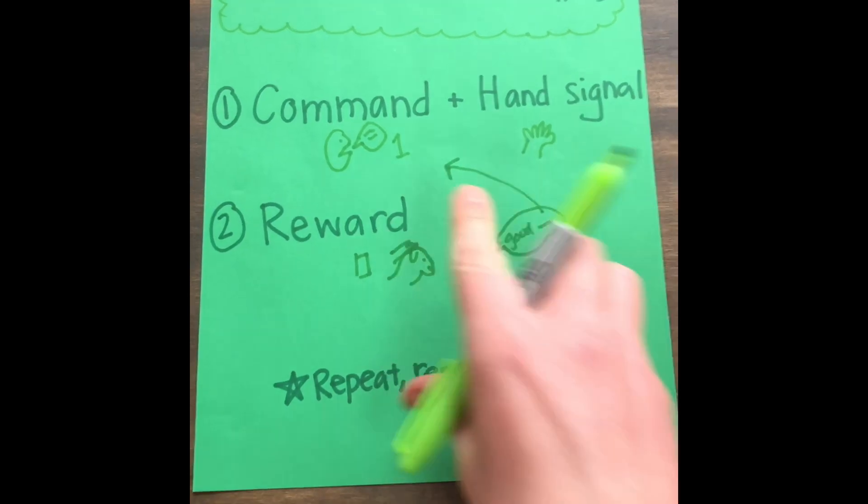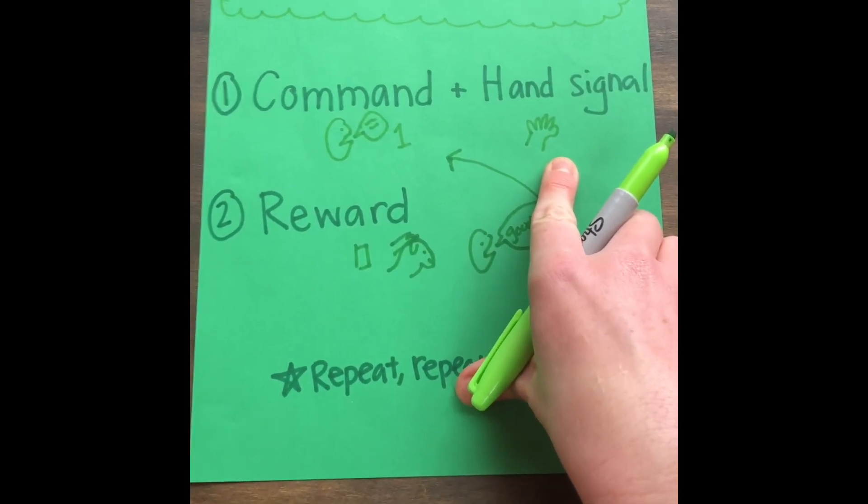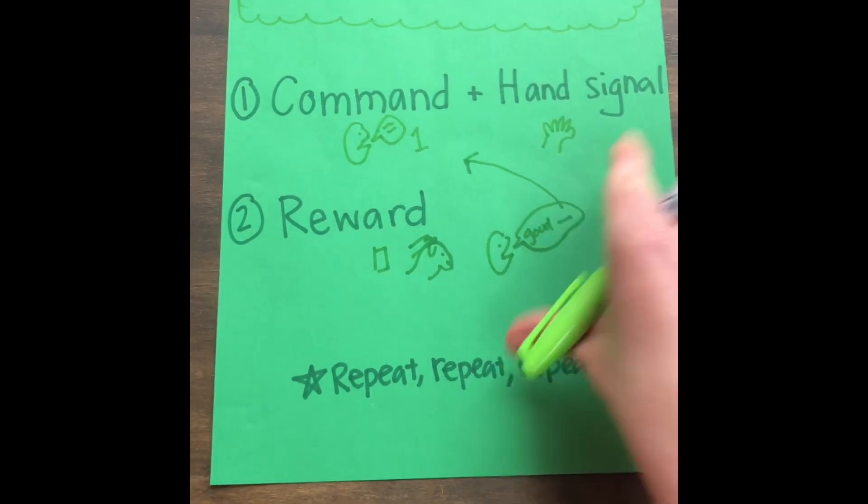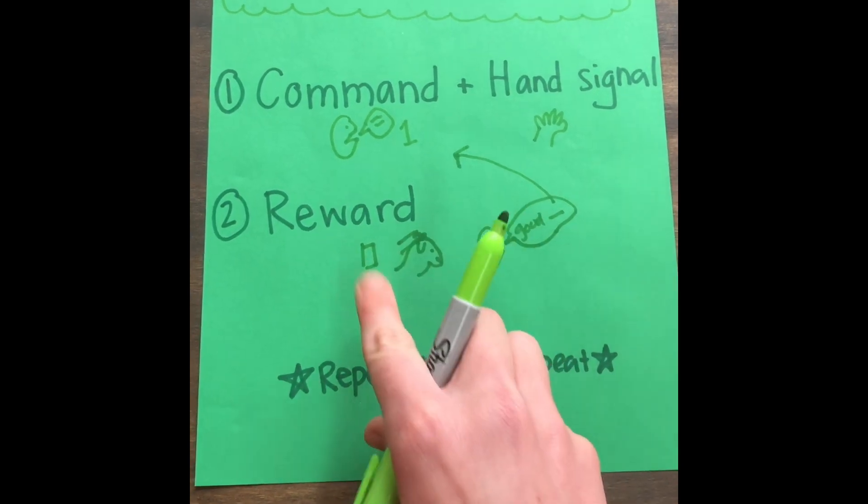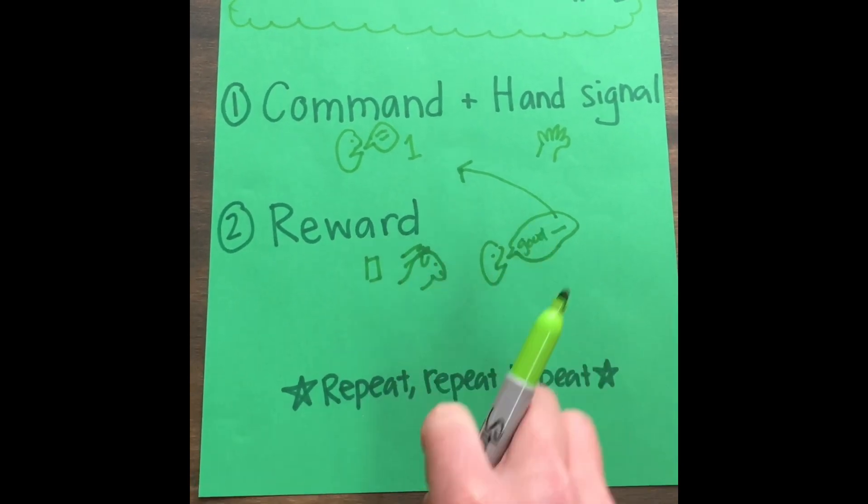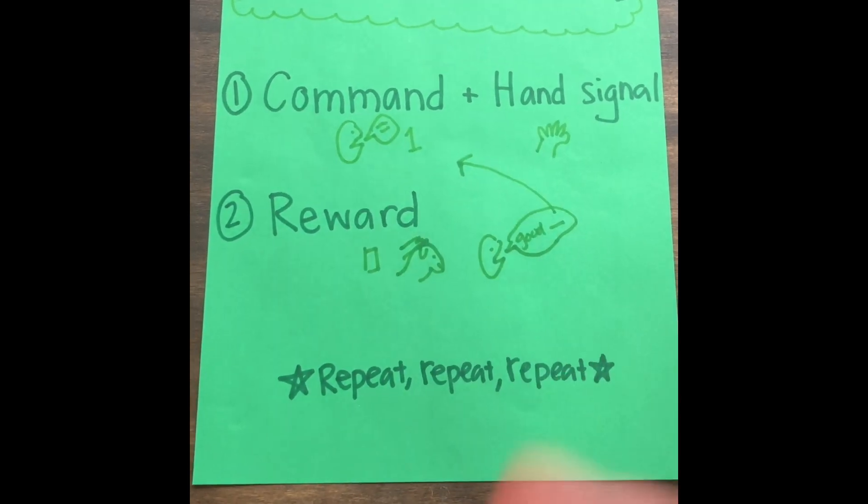So again to review, you just want to give them the command and the hand signal. For the first few times when you do the command and the hand signal, you then want to push them into whatever the action is, and then as soon as they do it you give them a reward like a treat, a pat on the head, or saying good sit, good roll over, good whatever it is.